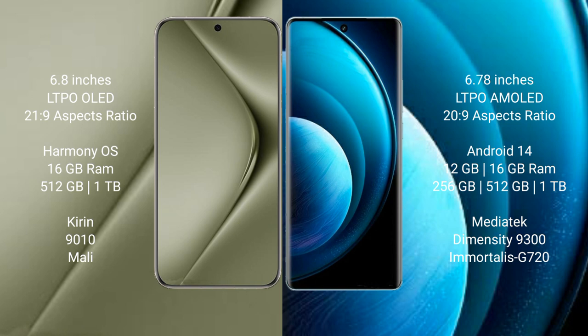The Huawei Pura 70 Ultra comes with 16GB RAM and 512GB or 1TB internal storage, with the Kirin 9200 processor and a dedicated GPU. The Vivo X100 Pro comes with 12GB or 16GB RAM and 256GB, 512GB, or 1TB internal storage, with the MediaTek Dimensity 9300 processor and Mali GPU G720.